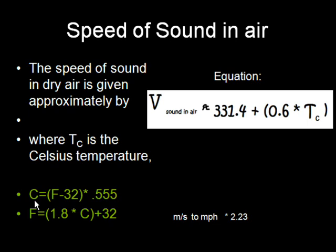Here at the bottom I show approximate conversions for going from Fahrenheit to Celsius and Celsius to Fahrenheit. We also have a conversion because the problem we're going to take on today asks for meters per second and miles per hour. Here's the conversion from going from meters per second to miles per hour, it's approximately 2.23.